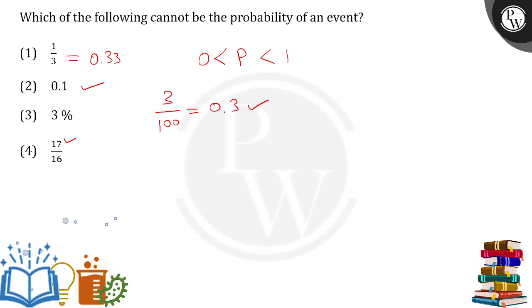The numerator is greater than the denominator. This will come out to be one point something, which cannot be the case. The answer is option number 4 because this cannot be the probability of any event.